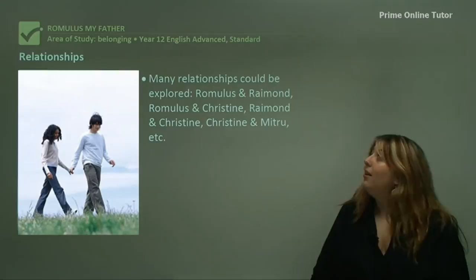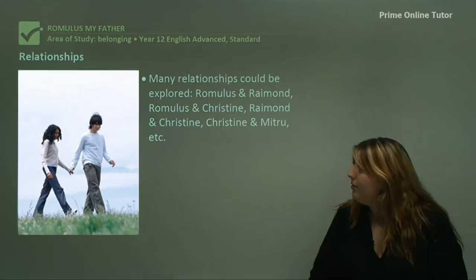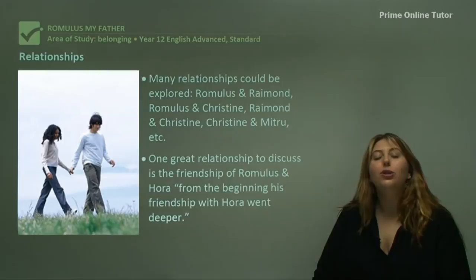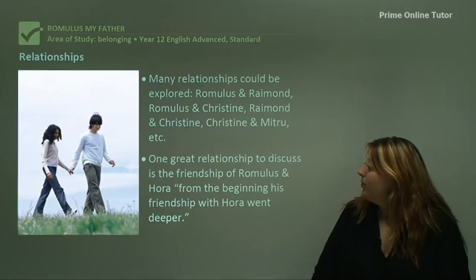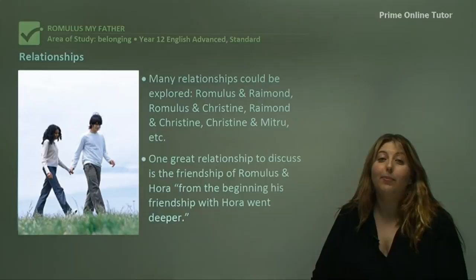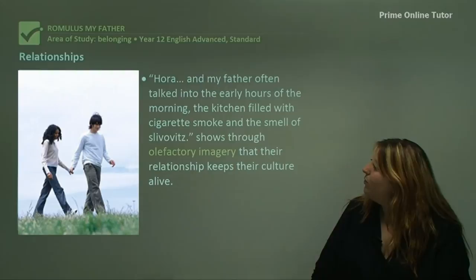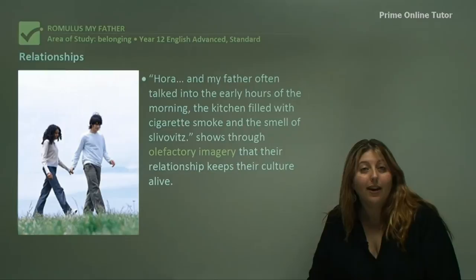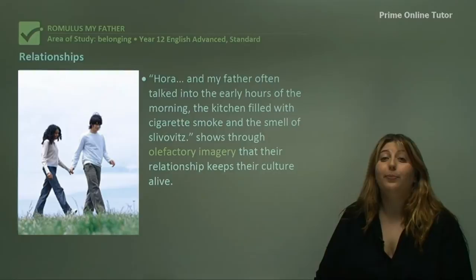Another thing you might want to talk about is relationships. There are lots of relationships to explore in Romulus My Father — Romulus and Raymond, Romulus and Christine, Raymond and Christine, Christine and Mitru. However, the best relationship to talk about is the friendship between Romulus and Hora, because it allows you to talk about values and culture as well. It's described as: 'From the beginning, his relationship with Hora went deeper. Hora and my father talked into the early hours of morning, the kitchen filled with cigarette smoke and smell of Slivovitz.' That shows through olfactory imagery that their relationship keeps their culture alive. Slivovitz is a plum brandy drunk a lot in Baltic areas, so it shows them bringing their culture with them as part of their friendship.